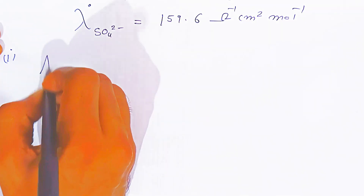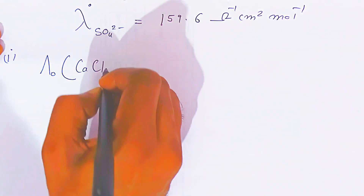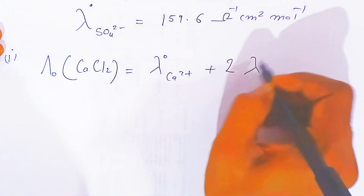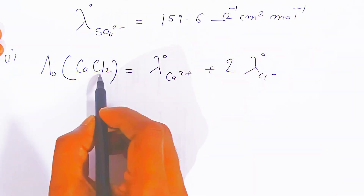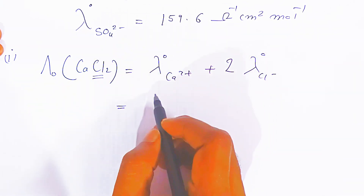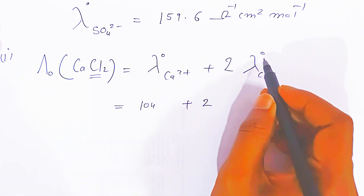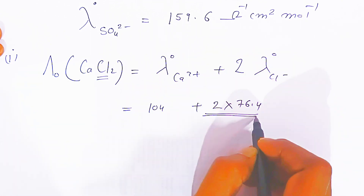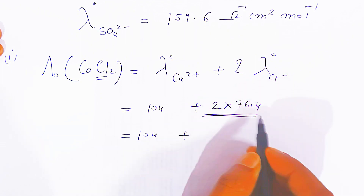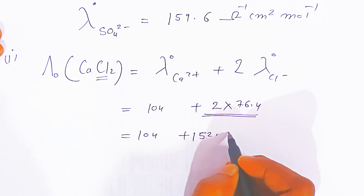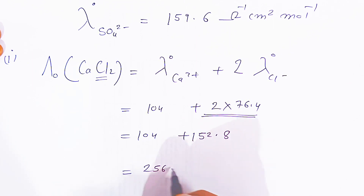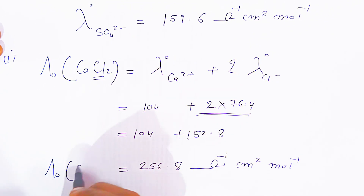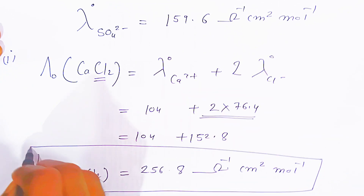The molar conductivity of calcium chloride is nothing but molar conductivity of Ca²⁺ plus two times molar conductivity of Cl⁻. Now just put the values: it is 104 plus twice of 76.4, which gives 152.8. When you add, you get 256.8 ohm inverse centimeter square per mole. This is the molar conductivity of calcium chloride.